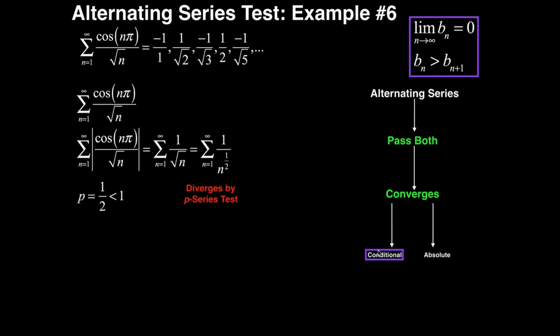Remember: if the absolute value of the alternating series diverges, the original series is conditionally convergent. But if it had converged, it would be absolutely convergent. Hopefully this gave you a better grasp on the alternating series test. Please make sure to like this video and subscribe to the channel. In the next few videos, we're going to do a different series test. Thanks for watching.